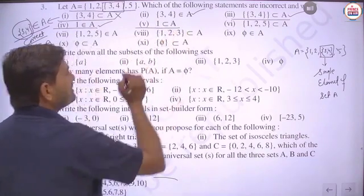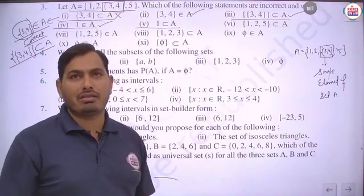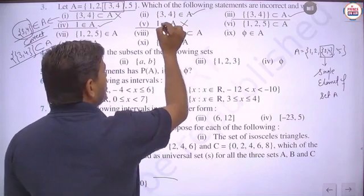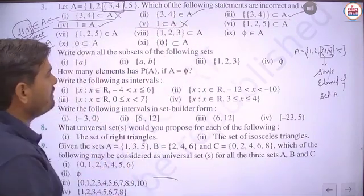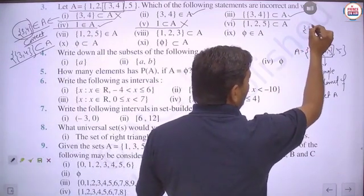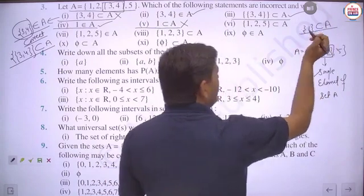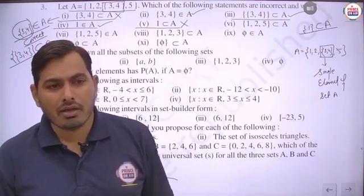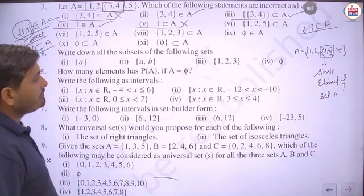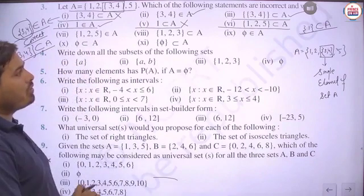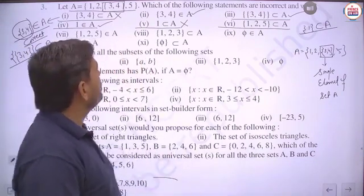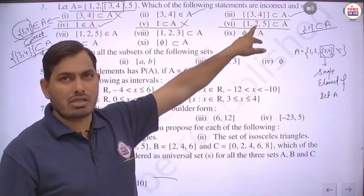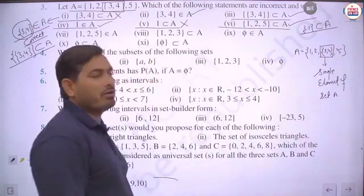Fifth part: {1} ⊆ A — this is incorrect because 1 is an element, not a set with curly braces. For the subset relation to be correct, we would need {{1}} ⊆ A or write it as {1} ⊆ A only if 1 is treated as a subset. Sixth part: {1, 2, 5} ⊆ A — checking: 1, 2, and 5 are all elements of A, so this is a correct statement.